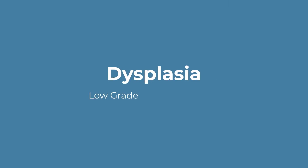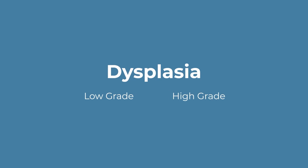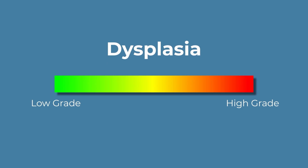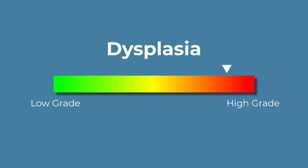There can be low grade or high grade dysplasia, kind of along a spectrum. The low grade dysplasia is at the earliest stages of pre-cancer, whereas the high grade dysplasia is more concerning and worrisome because it's getting closer towards cancer. Based on that spectrum and what we see under the microscope, your gastroenterologist will determine whatever your next step is for your treatment.